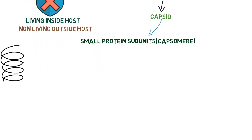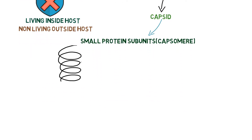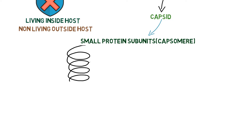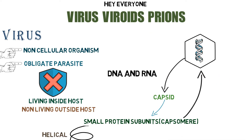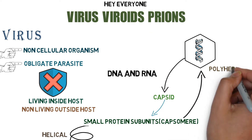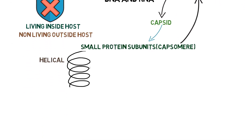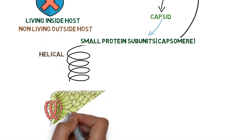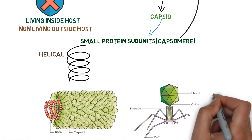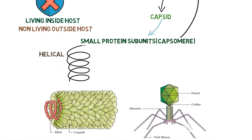There are two types of capsomere arrangement. First, it can be a helical coat surrounding the genetic material. The other type is polyhedral, as shown in the figure. For better visualization, I will draw the NCERT diagram here.